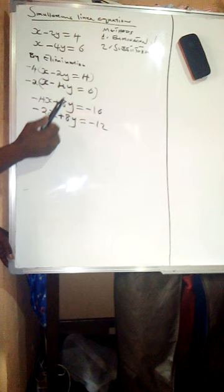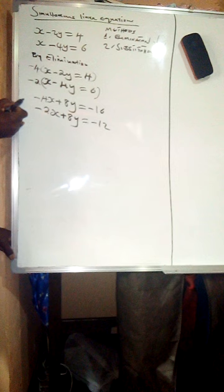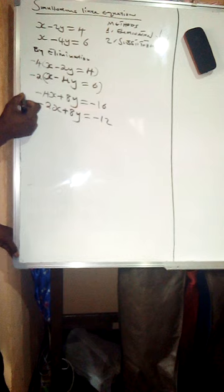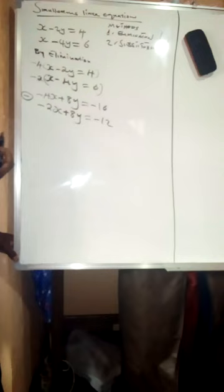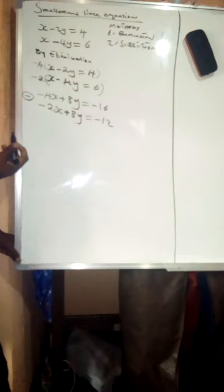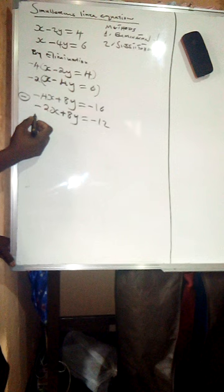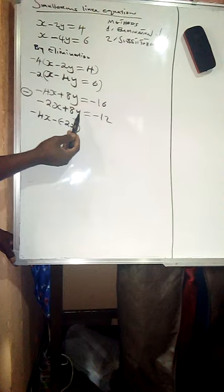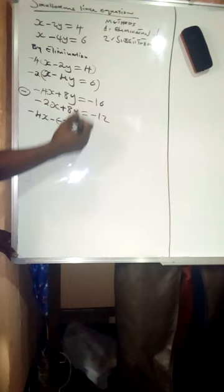At this point you can either add or subtract. Since we have positive 8y and positive 8y, we use subtraction to eliminate the y variables and maintain the x. So we subtract: negative 4x minus negative 2x, and positive 8y minus 8y gives zero — they are eliminated, which is exactly what we wanted.